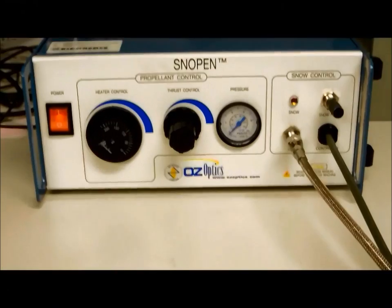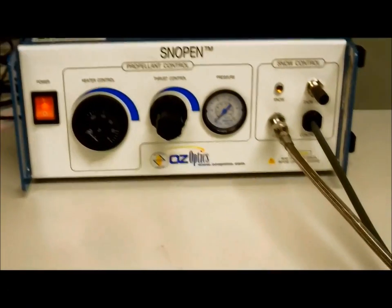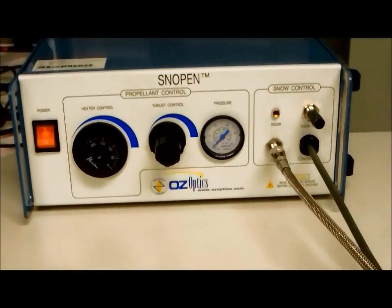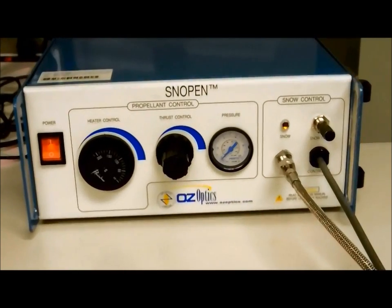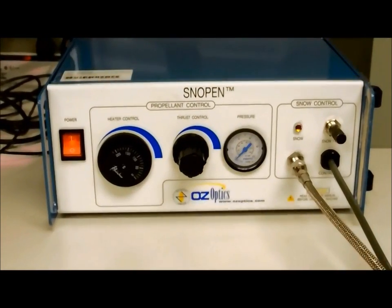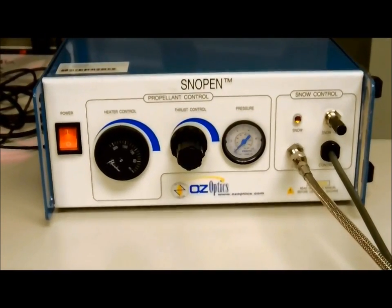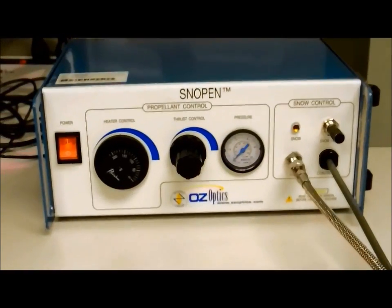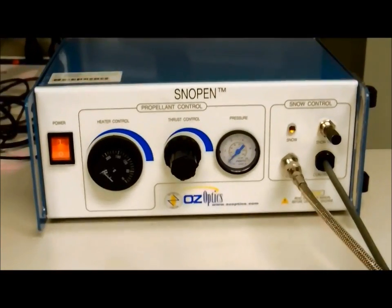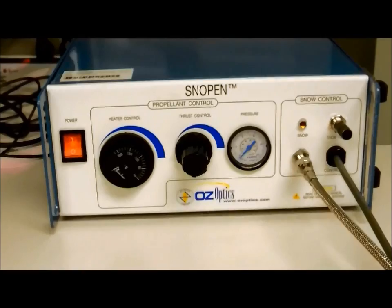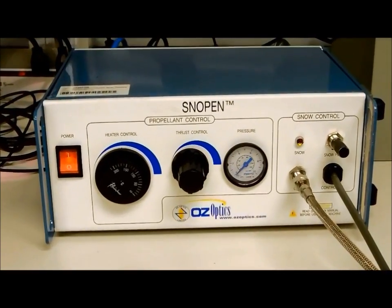The front of the CO2 unit has a few basic controls. One of them is power, which is obvious. There's a heater control which controls heating of the carrier gas, which reduces condensation and avoids condensation during cleaning.